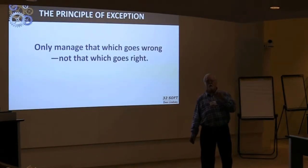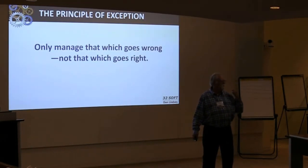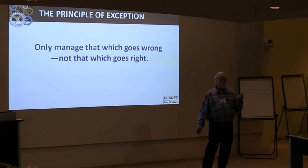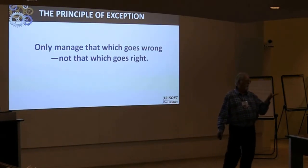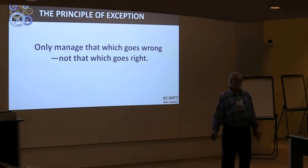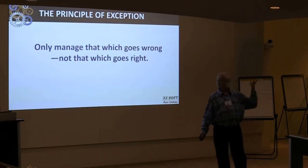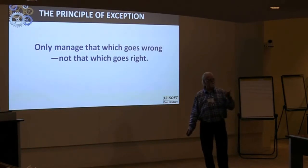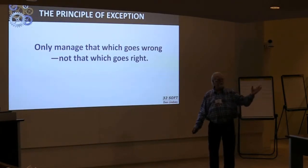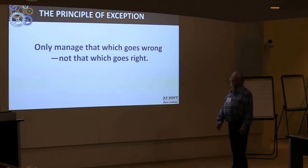MRP is based upon a primary principle: you only want to look at what is out of phase with a plan — that which is wrong, not that which is right. In our ERP system we've got about 8,000 parts and about 150,000 records in the MRPD table. MRP works upon a principle of exception, so it's only going to show you what you need to take action on.